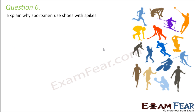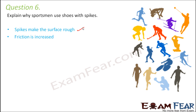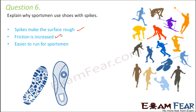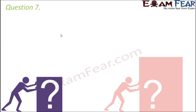Question number six. Explain why sportsmen use shoes with spikes. Because spikes make the surface of the shoes rough. When the shoes become rough, friction increases. If friction increases, it becomes easier for them to walk or run because their grip on the ground increases.